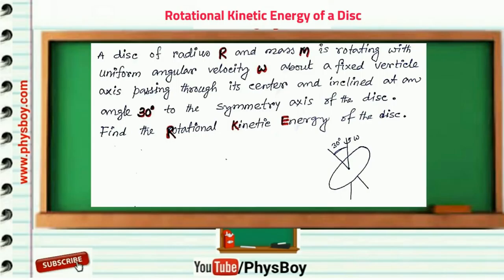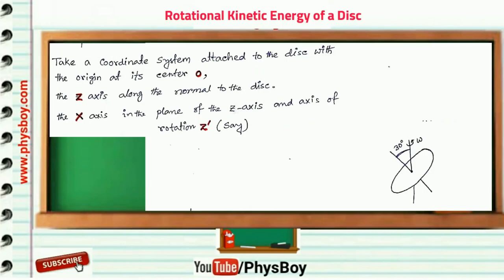Say the rotation axis about which this disk is rotating is Z prime axis, and I am taking another Cartesian coordinate system attached to the disk with the origin at its center O, and consider the symmetry axis of the disk is Z axis.